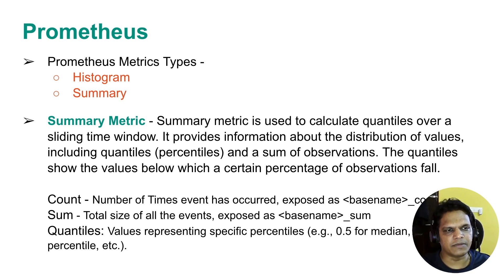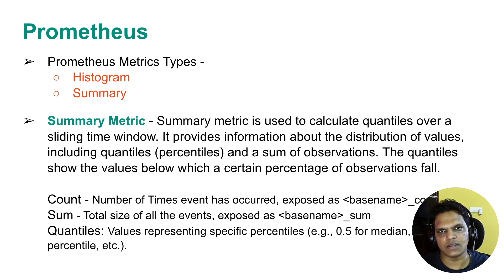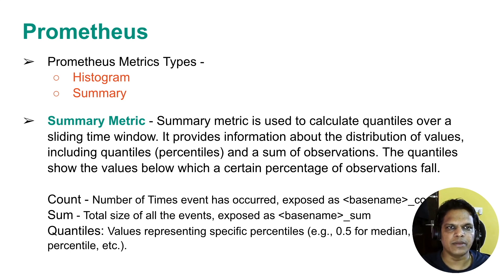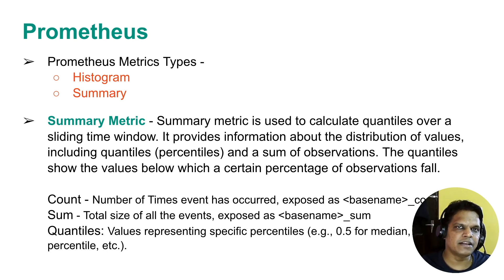First we will discuss the summary metric. The summary metric is basically used to calculate the average of something. With the help of the summary metric, you can calculate the quantile over a sliding time window. The summary metric provides the distribution of values, including the quantiles and some of the observations. In the summary metric, you will get three components: the count, sum, and quantile.